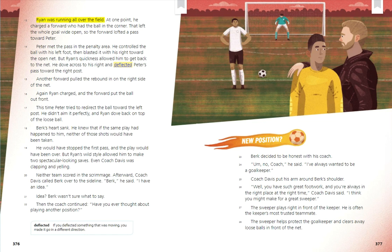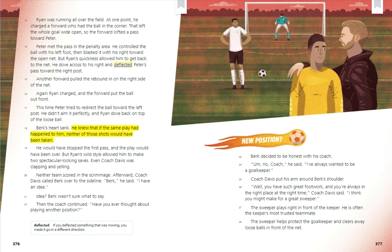Ryan was running all over the field. At one point, he charged a forward who had the ball in the corner. That left the whole goal wide open, so the forward lofted a pass toward Peter. Peter met the pass in the penalty area, controlled the ball with his left foot, then blasted it with his right toward the open net. But Ryan's quickness allowed him to get back to the net. He dove across and deflected Peter's pass toward the right post. Another forward pulled the rebound in on the right side. Again Ryan charged, and Peter tried to redirect the ball toward the left post but didn't aim it perfectly, and Ryan dove back on top of the loose ball. Burke's heart sank — he knew neither of those shots would have been taken if he'd been in goal. But Ryan's wild style allowed him to make two spectacular-looking saves. Even Coach Davis was clapping and yelling.